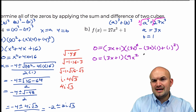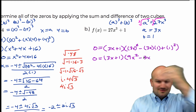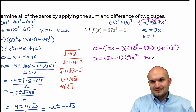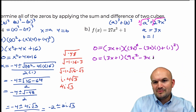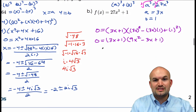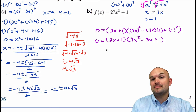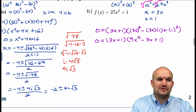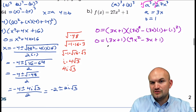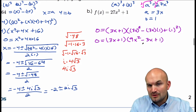This becomes 9x squared minus 3x plus 1. Using the zero product property, I could solve for x from the binomial factor, but I'm going to do that last because I know I need to solve the trinomial first — it's non-factorable. These trinomials from sum and difference of two cubes always give complex solutions.